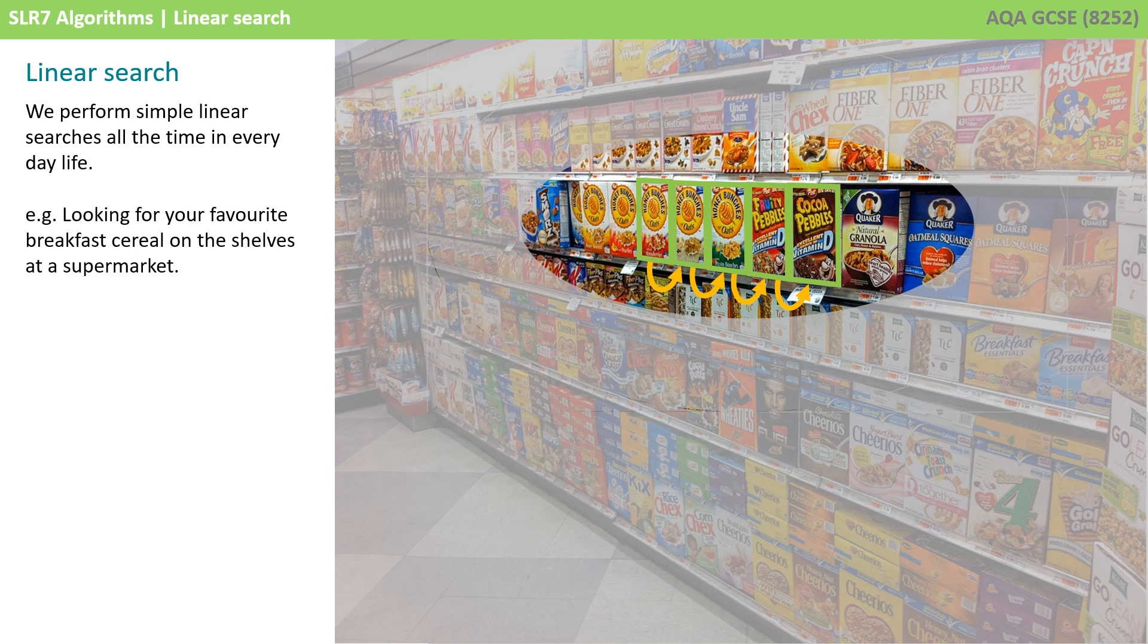And then it needs to look up the product description and price in a database of products. It could do this by starting at the first product and comparing the barcode to see if it matches the one in the database. And if not, it could keep checking the next one and the next one until it finds the product or it's not in the list at all.